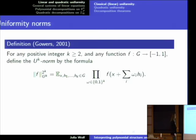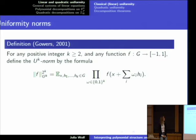We'll be talking about the uniformity norms. I expect most people here to be familiar with them, but I'll put up the definition again just to remind you. Essentially the k-th uniformity norm is an average over a k-dimensional cube, and you can define it on any finite abelian group G. I'm only looking at real valued functions here, but there is no real restriction — I would have to put some complex conjugate signs on here if I allowed complex valued functions.